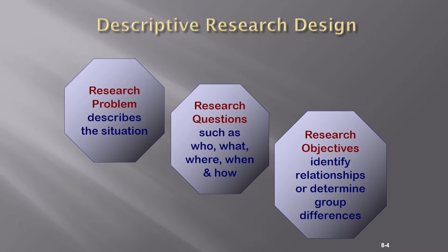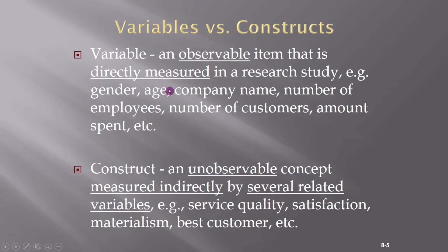Because there are variables and constants in your research, we need to define them. A variable is an observable item that is directly measured in a research study. For example: gender, age, company name, number of employees, number of customers, amount spent, and so on.